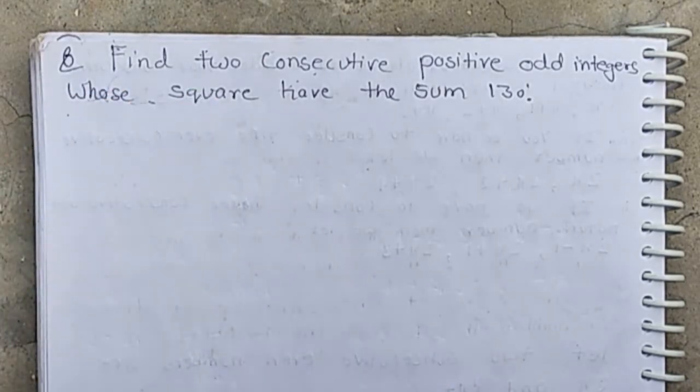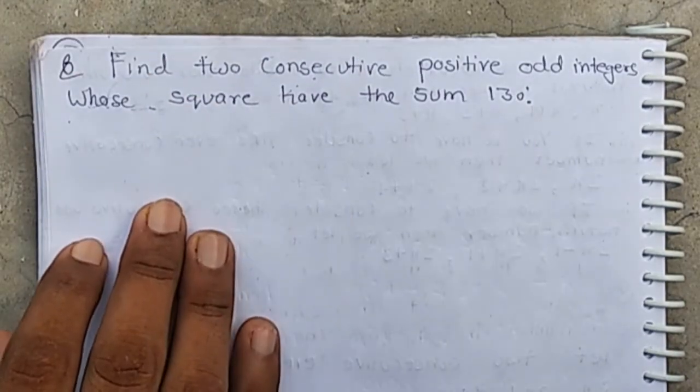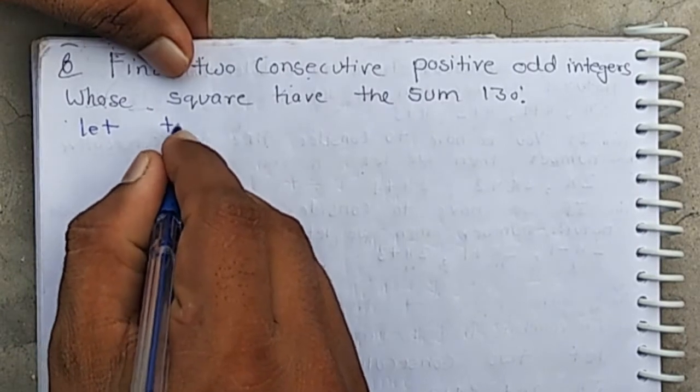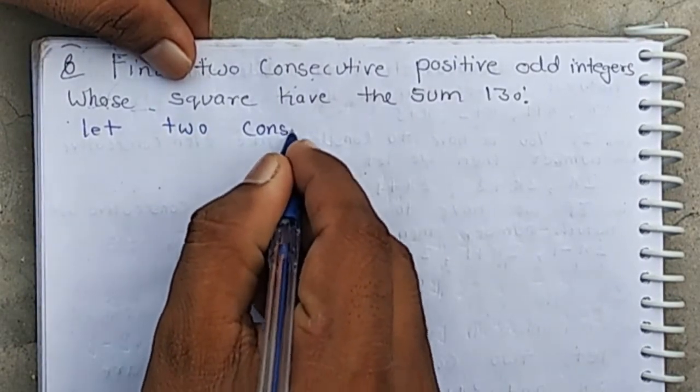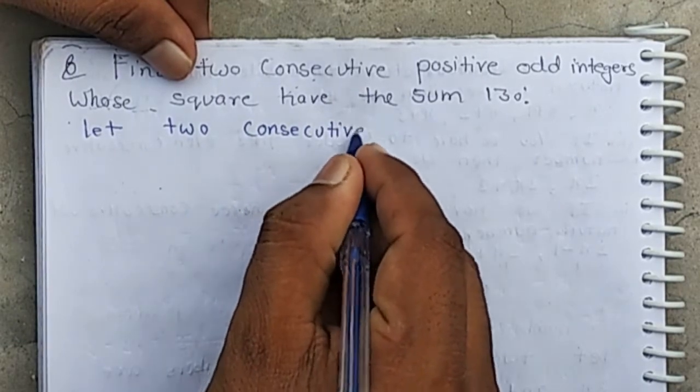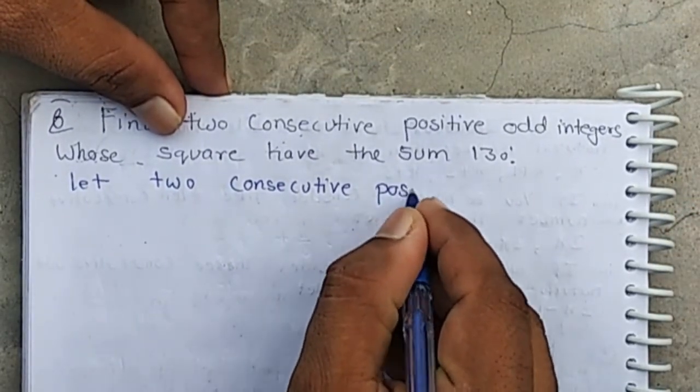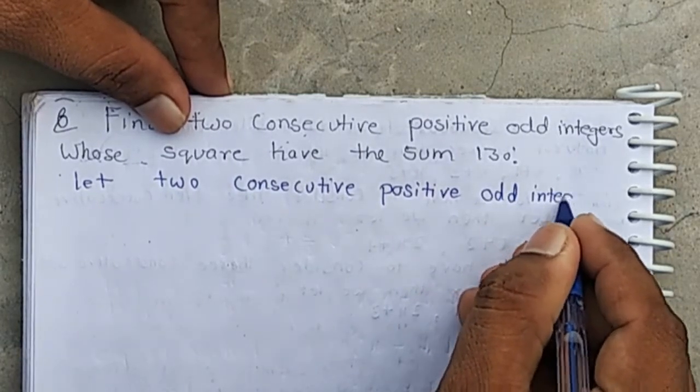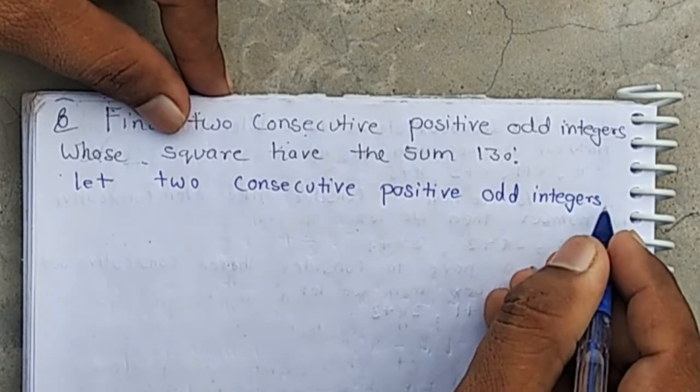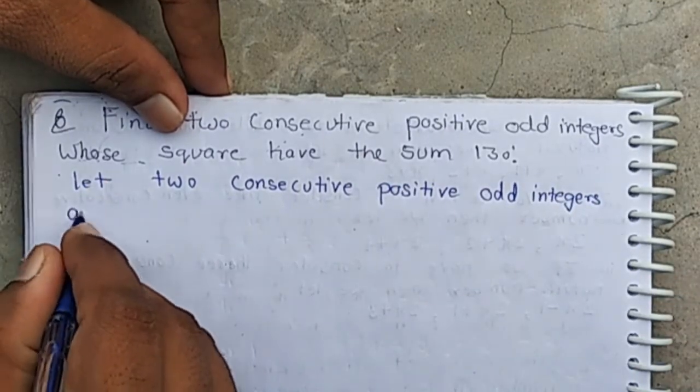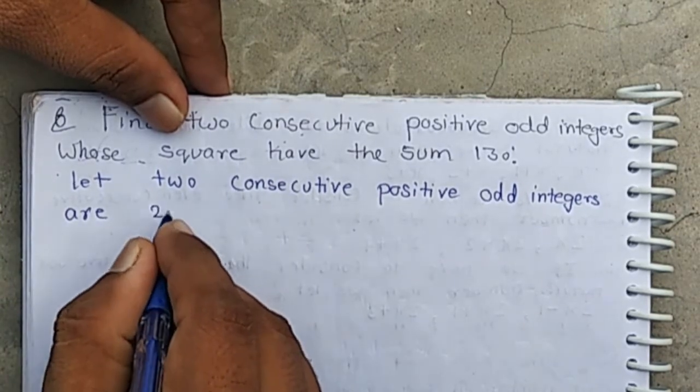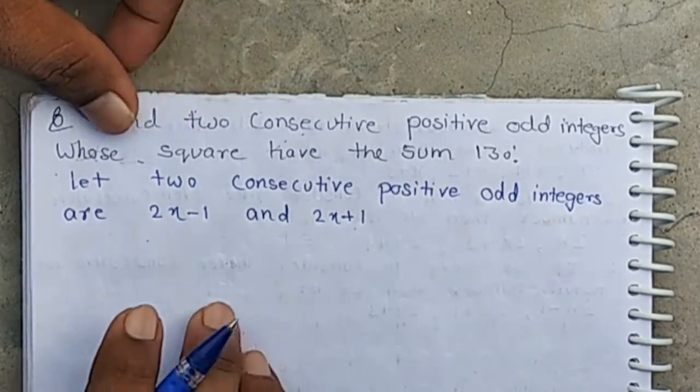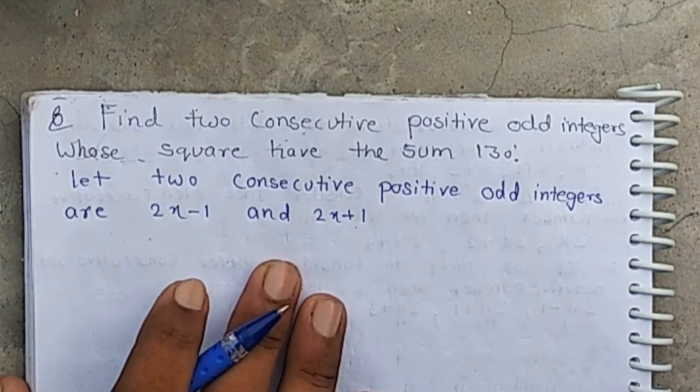Let two consecutive positive odd integers be 2x-1 and 2x+1. These are the first two consecutive odd integers.